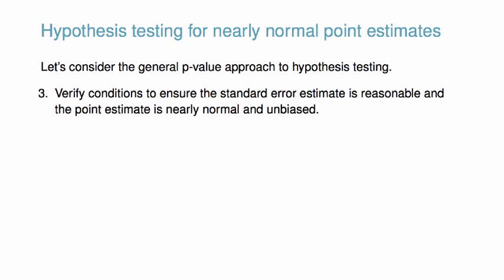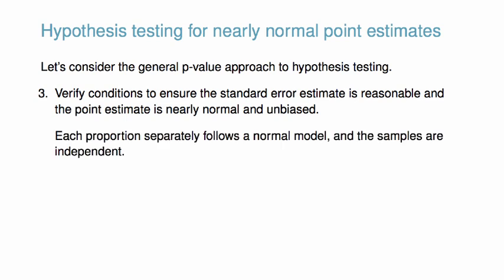Third, we need to verify conditions to ensure the standard error estimate is reasonable and the point estimate is nearly normal and unbiased. These conditions will change slightly depending on the type of data and estimator. In our case, we need each proportion to separately follow a normal model, and that the samples are independent.